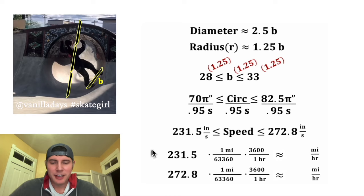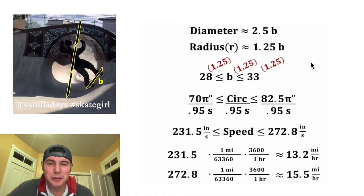And after we do 231.5 divided by 63,360 times 3,600, we get 13.2 miles per hour. And after we do this one on bottom, we get 15.5 miles per hour. So speed around that loop is somewhere between 13.2 and 15.5 miles per hour. How exciting!